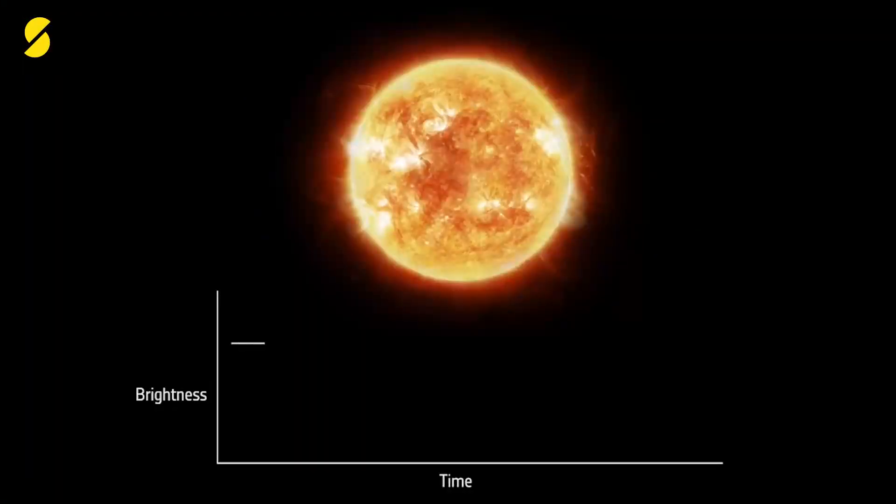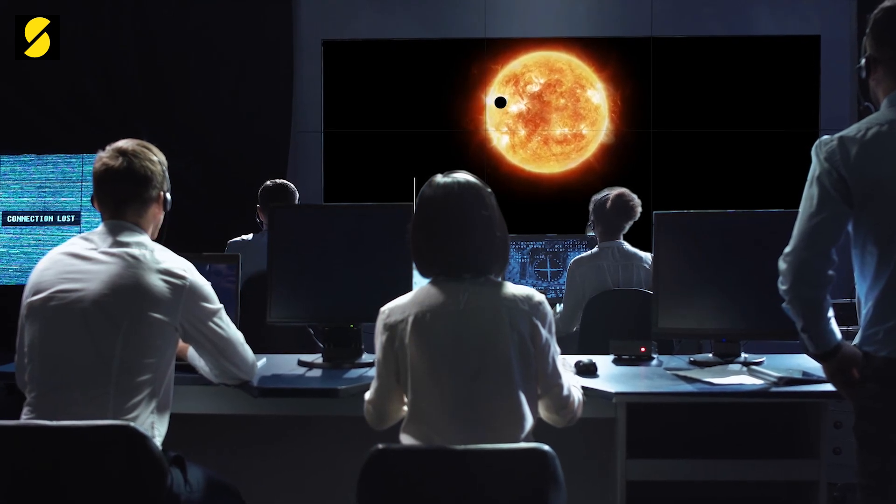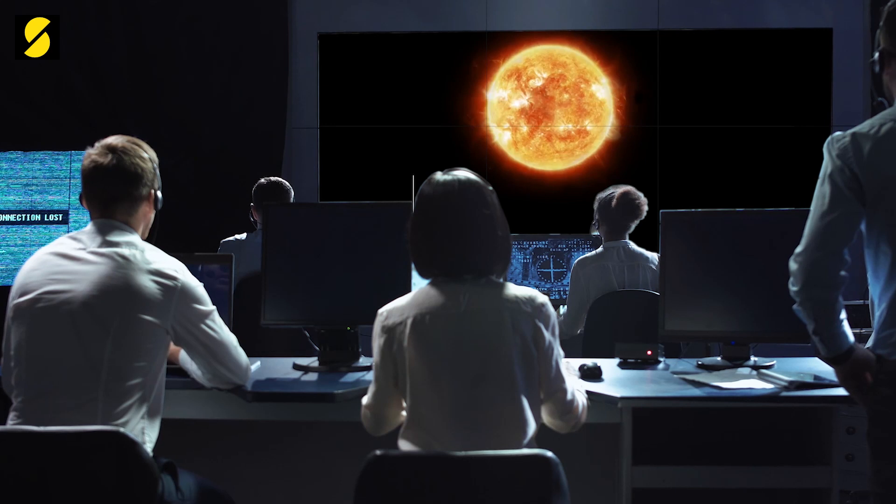When a planet passes in front of its parent star, relative to our line of sight, some of the star's light will disappear for a short while. This is called the transit method, and it helps exoplanet hunters to search for worlds around other stars.